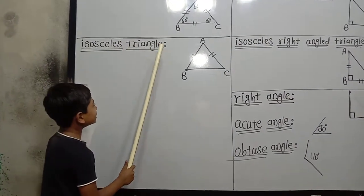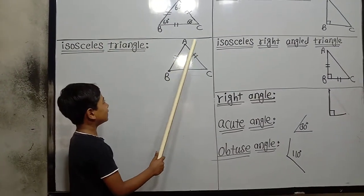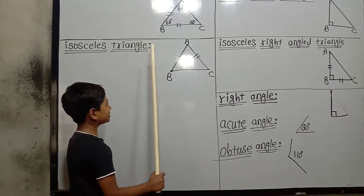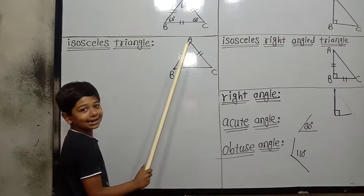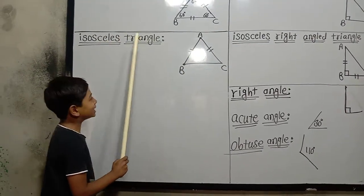Isosceles triangle: if two sides of a triangle are congruent, then that triangle is called an isosceles triangle.